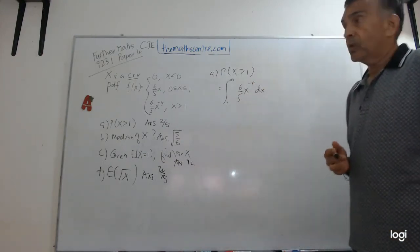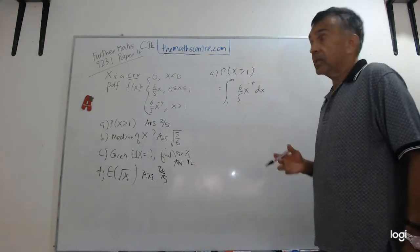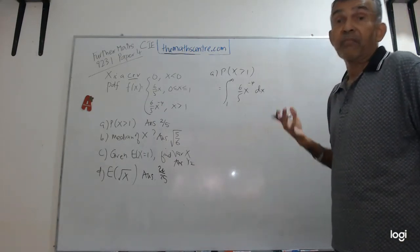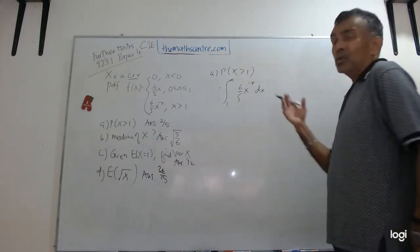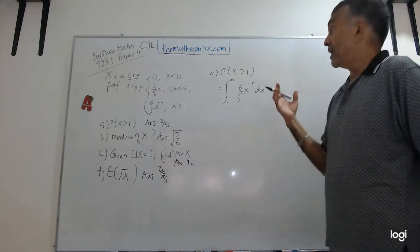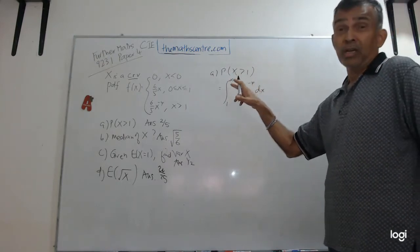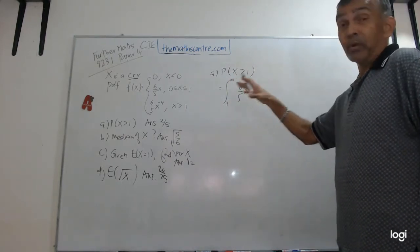To find probabilities, we take f(x) dx. I repeat, to find probabilities when we are dealing with continuous random variables, we take f(x) dx. You can also work this using the complement, because I see there's a linear function from 0 to 1. So some of you may find it easier to work with linear functions.